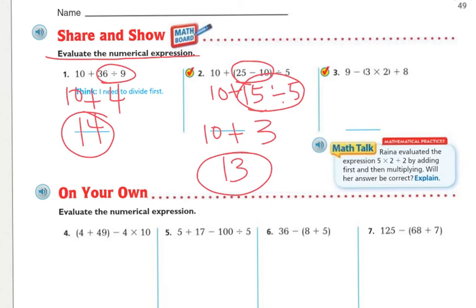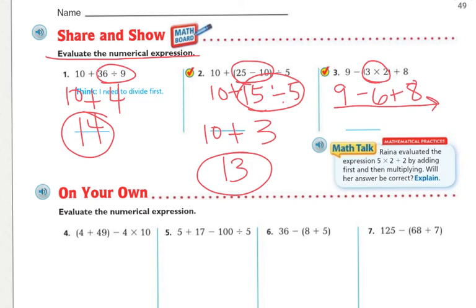Next: nine minus parentheses three times two, parentheses, plus eight. Do the parentheses first: three times two is six. Bring down nine minus and plus eight. Now we just have addition and subtraction, so go left to right: nine minus six is three, and three plus eight is eleven.